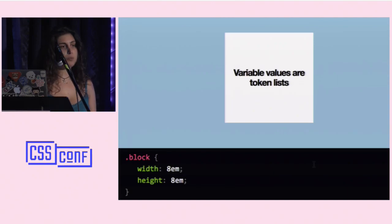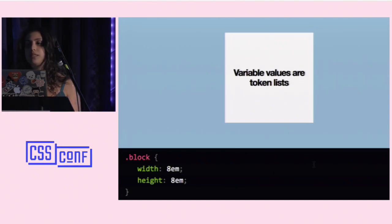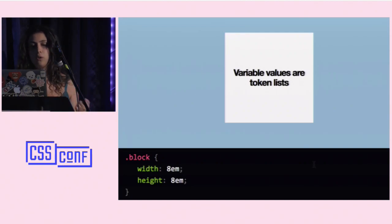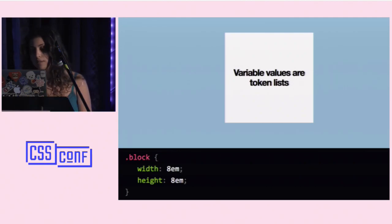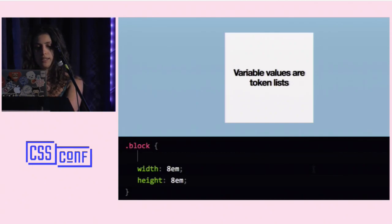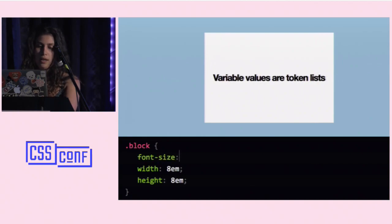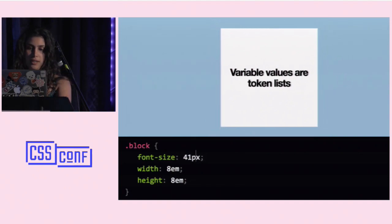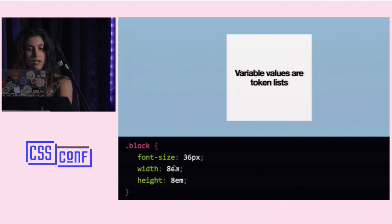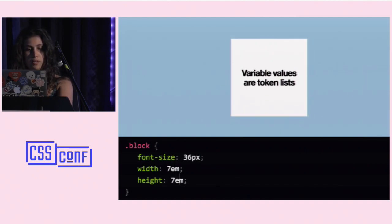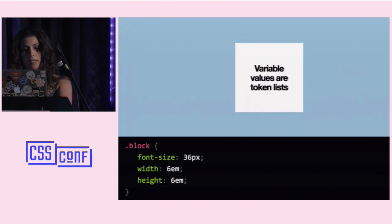Something that will trip up people coming from the Sass world is that in Sass you can use variables everywhere — in selectors, property values, concatenated with other things — because the Sass compiler just spits out CSS and the browser never knew there were variables. That's not true with CSS variables, mostly for the better because they're dynamic. But there are a few gotchas. For example, if I want to size a div based on font size and use '6' as a variable without the 'em' unit, it simply won't work.